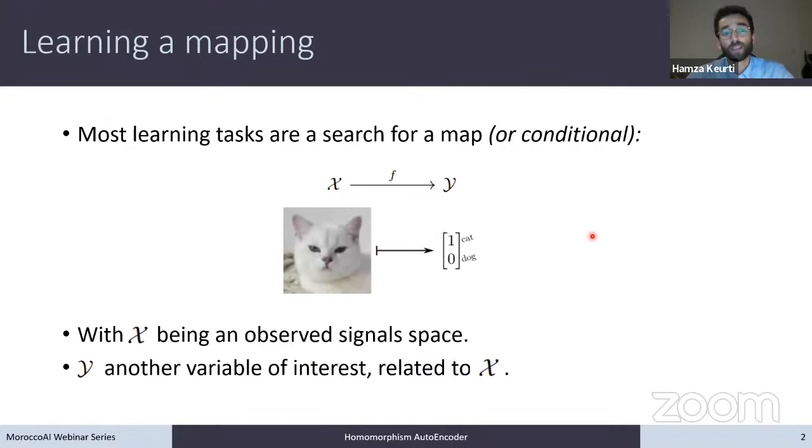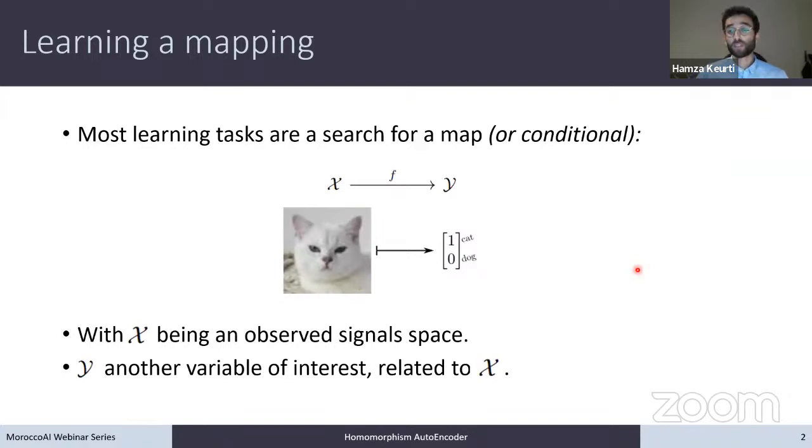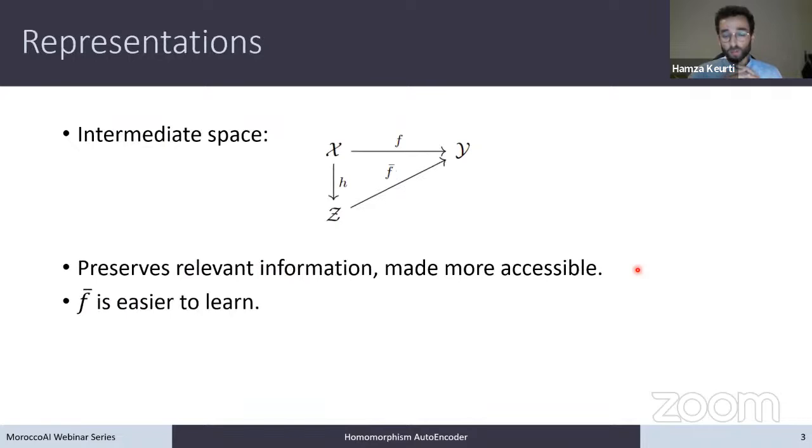Let's start with a bit of motivation. So any learning task, or if we talk about supervised learning, it always involves a search for a map or a conditional between random variables. One is observed, x, and one is a variable of interest, y, which is related to the observations of x. So x here is, for example, in a classification task, trying to classify these images. Is it a cat? Is it a dog? Right? And then y is just the label.